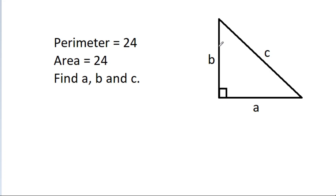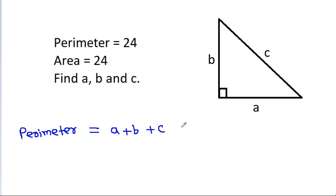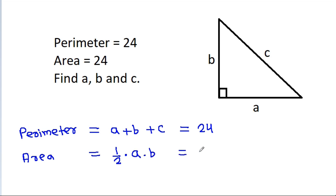In this video, we have given a right angle triangle whose perimeter is 24 and area is 24. We have to find A, B, and C. Perimeter is equal to A plus B plus C, that is 24. Area is equal to half times base A and height B, that is 24. By Pythagoras theorem, A squared plus B squared will be equal to C squared.